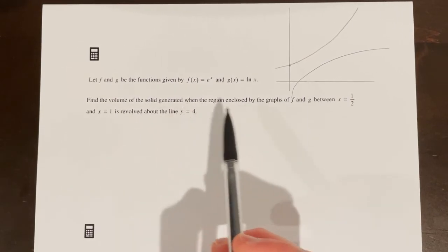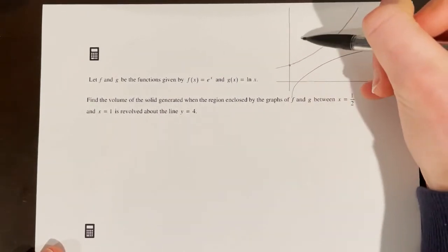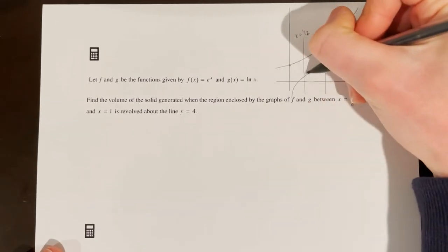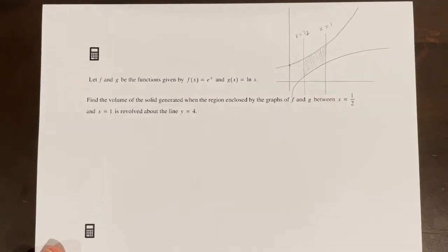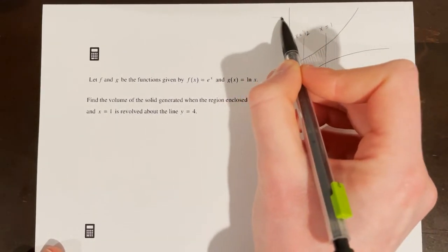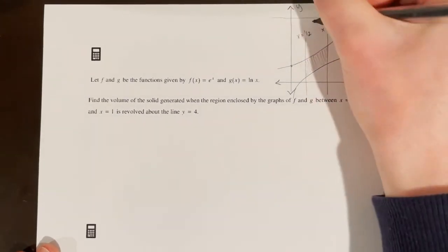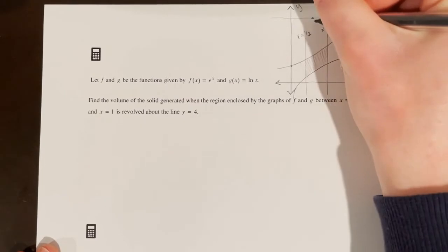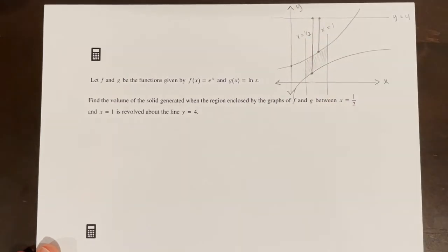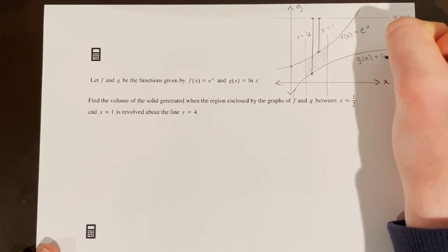The region enclosed by f and g is between x = 1/2 and x = 1. We're revolving this region about the line y = 4, which I'll sketch up here. The outer radius extends from y = 4 all the way down to the bottom curve, and the inner radius extends from y = 4 down to the upper curve. I'll label f(x) = eˣ and g(x) = ln(x) on the graph.